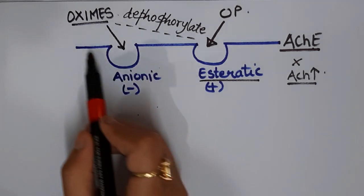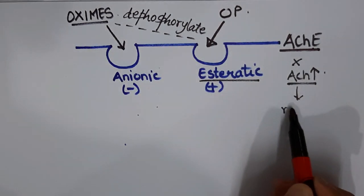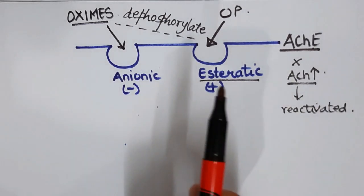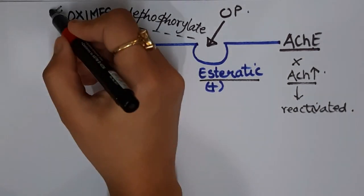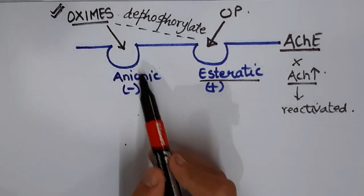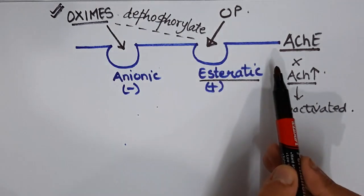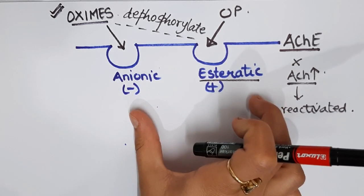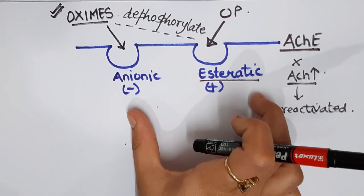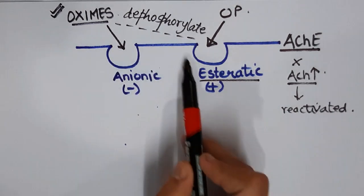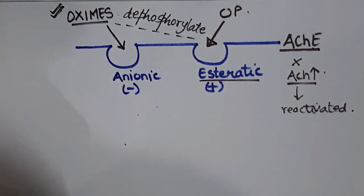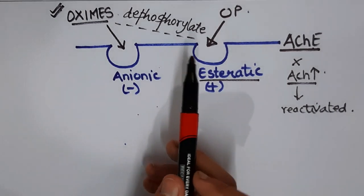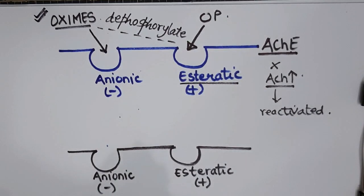Once acetylcholinesterase is reactivated, neuromuscular transmission can be improved. Early administration of oximes is critical because the phosphorylated enzyme undergoes aging, becoming resistant to reactivation. If oximes are not given promptly, once the enzyme ages, they will no longer be able to reverse the inactivation.